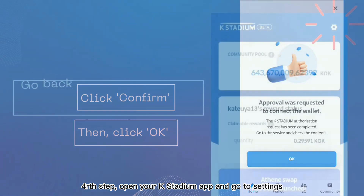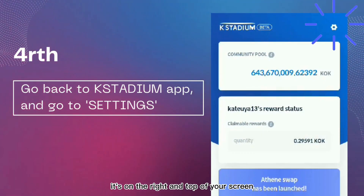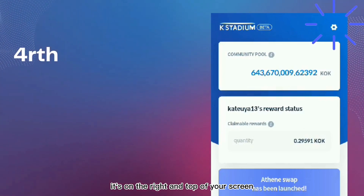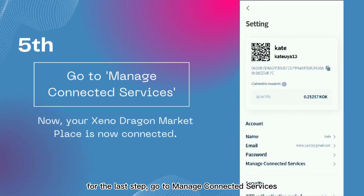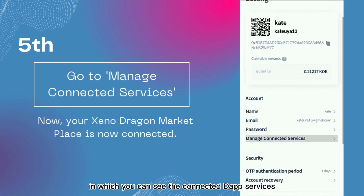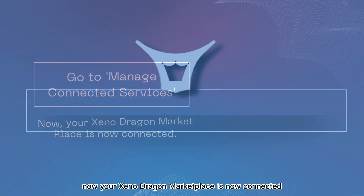Fourth, open your K-Stadium app and go to Settings — it's on the top right of your screen. For the last step, go to Manage Connected Services. This is the new function of the app where you can see the connected dApp services. Your XenoDragon marketplace is now connected.